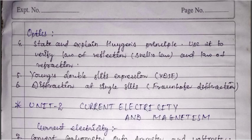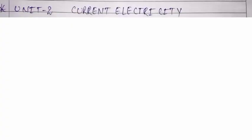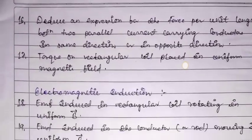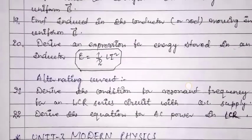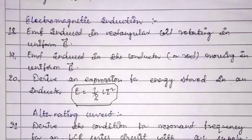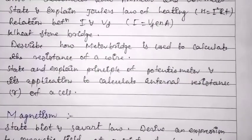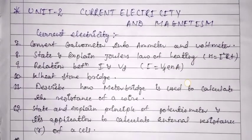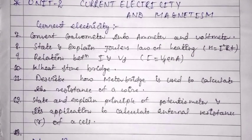In electricity and magnetism, the chapter of current electricity has important derivations: convert a galvanometer into an ammeter and voltmeter, state and explain Joule's law of heating, and derive the relation between electric current and drift velocity.